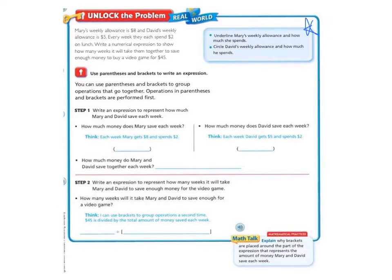It says, underline Mary's weekly allowance and how much she spends. So Mary's weekly allowance is $8. Oh, I forgot to underline how much Mary spends. Mary spends $2 each week on lunch. And then it says, circle David's weekly allowance and how much he spends. David's weekly allowance is $5, and he spends $2 also.